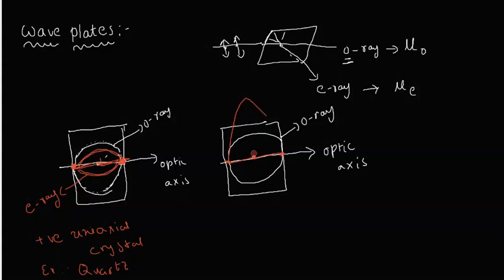When the direction of travel of the extraordinary ray is perpendicular to the optic axis, we get the maximum change in speed.